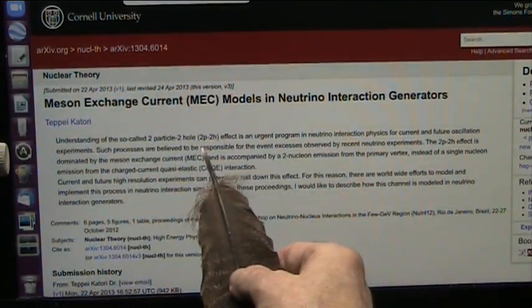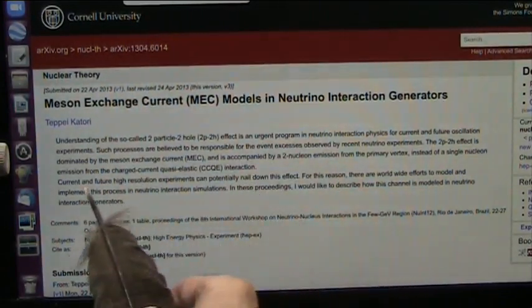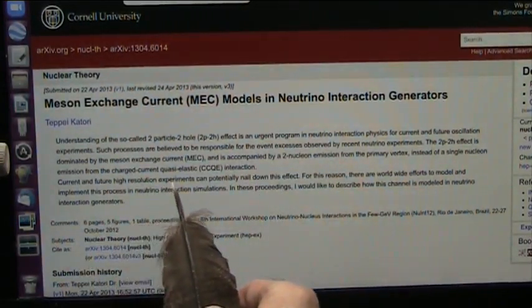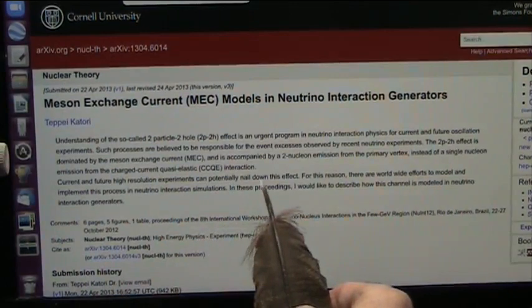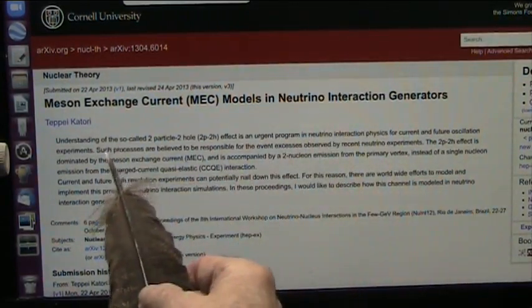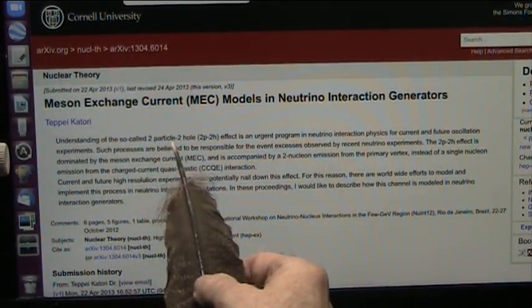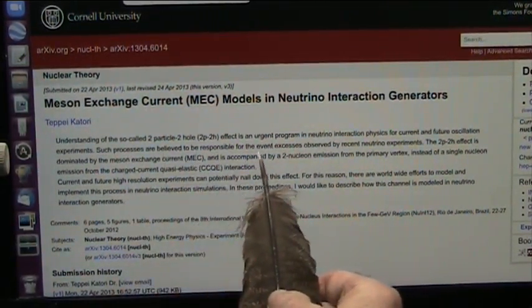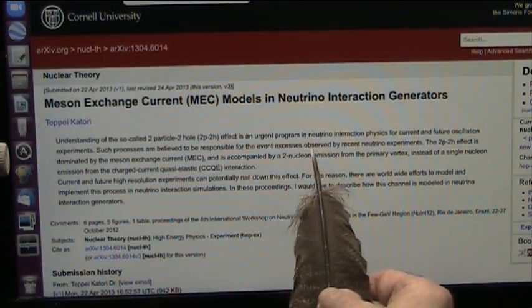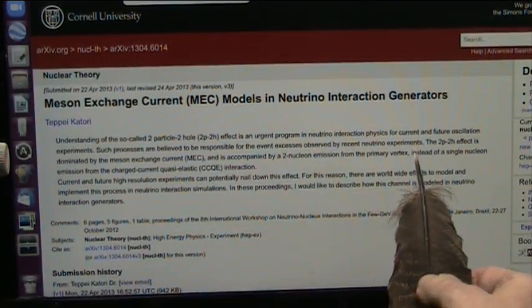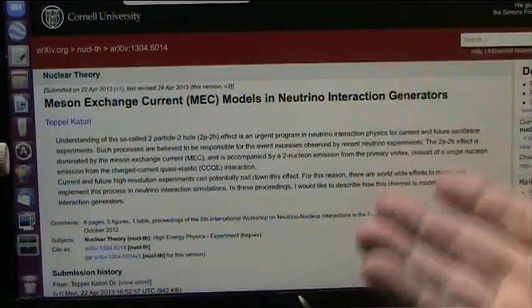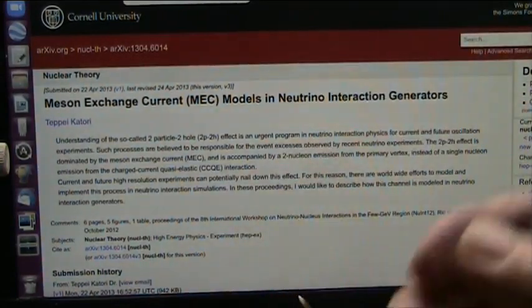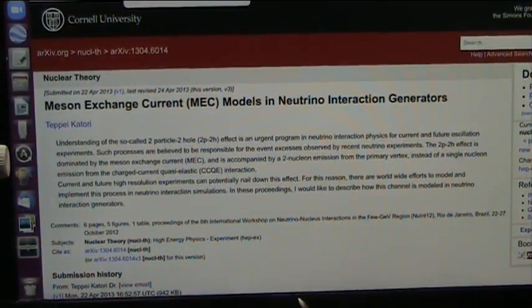It's urgent that we understand these immediately. Current and future high-resolution experiments can potentially nail down this effect. The effect is that these two particles, two holes, are believed to be responsible for the event excesses observed by recent neutrino experiments. Excesses means over input. You get excess energy back out. Let's see if we can show that.